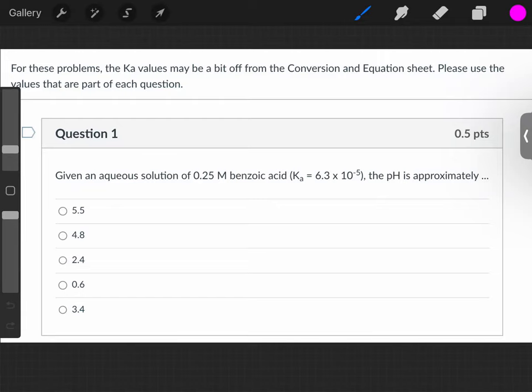So this question says, given an aqueous solution of 0.25 molar benzoic acid with a Ka value given there, the pH is approximately...